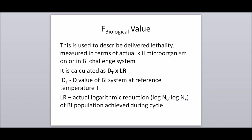F biological is calculated as Dt multiplied by Lr, where Dt is the D value of the BI system at reference temperature T, and Lr is the actual logarithmic reduction — that is, log N0 minus log Nf — of the BI population achieved during the cycle.